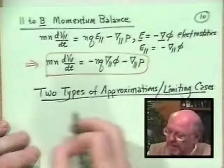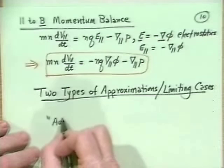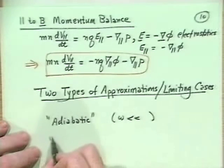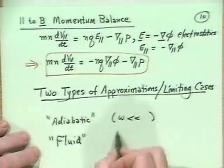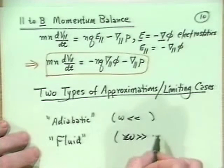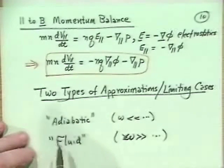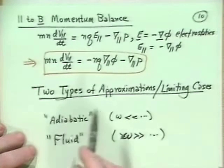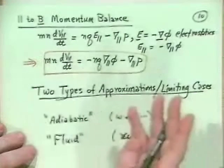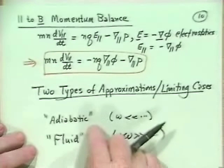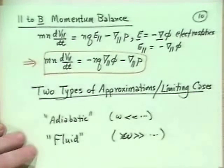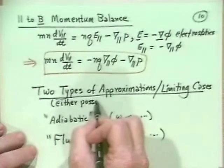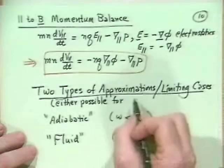The adiabatic response corresponds to omega much less than something, and the fluid response corresponds to omega much greater than something. We'll specify the 'something' shortly. The tricky part is that these conditions apply per species — it may be that electrons are adiabatic and ions are fluid-like, or both are adiabatic, or both are fluid. Either condition is possible for electrons or ions independently.